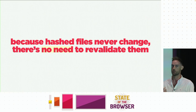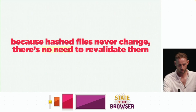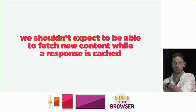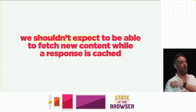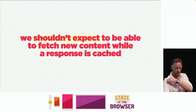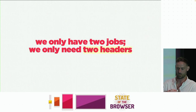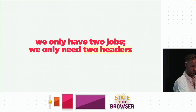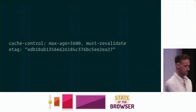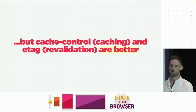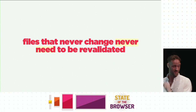Let me wrap up quickly — what have we learned? We shouldn't expect to be able to fetch new content while a response is cached — that's the biggest misconception. We only need two headers; we massively overcomplicate caching. I've got a client right now with pragma, last-modified, etag, cache-control, and more — you only need two headers max. Cache-Control and ETag, that's all you need. And if you've got a hashed file you don't even need ETag. Files that never change never need to be revalidated — cache them for 68 years and don't put an ETag on there.